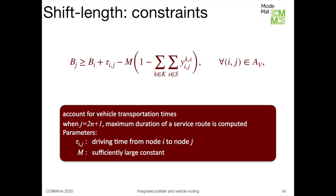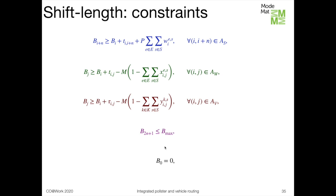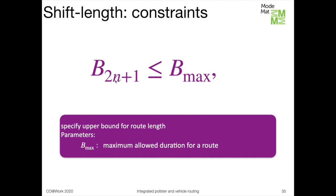The red constraints account for vehicle transportation times: whenever a vehicle transportation arc (i,j) is used, the visit time at j is at least the visit time at i plus the travel time from i to j. If j equals the return depot 2N+1, the arc is the last arc of some route and b_{2N+1} must be at least as large as the duration of that route. Since every route finishes with an arc entering the return depot, b_{2N+1} is at least as large as the duration of the longest route in the schedule. A final constraint sets b_0 equal to 0, and another implies that the duration of the longest route cannot exceed the maximum allowed duration.